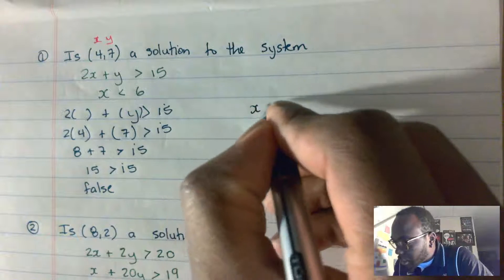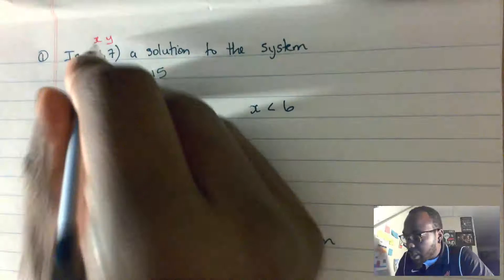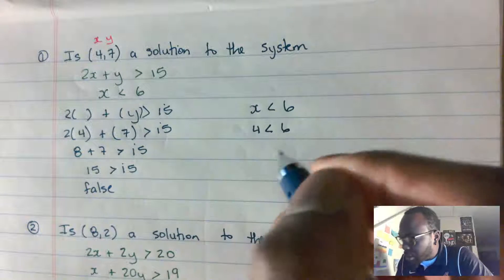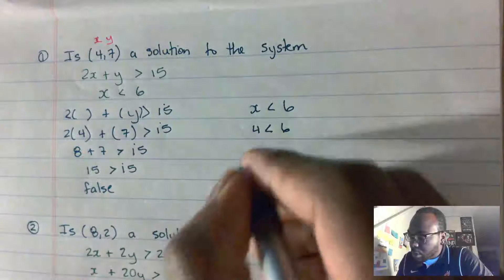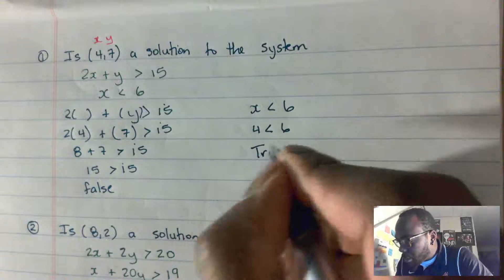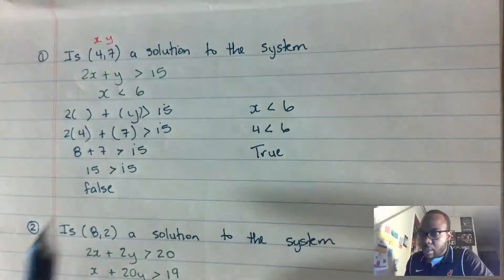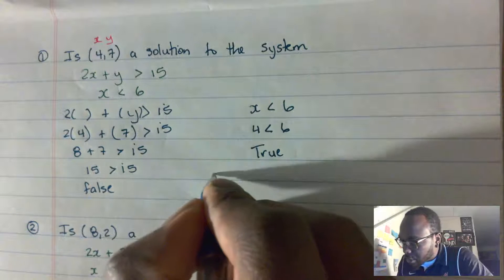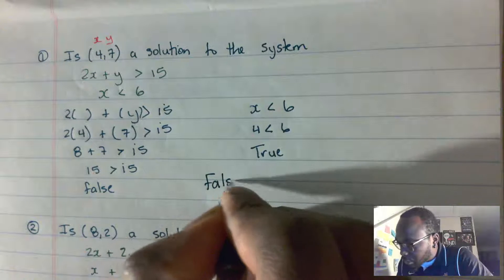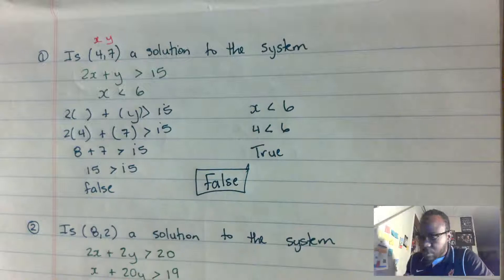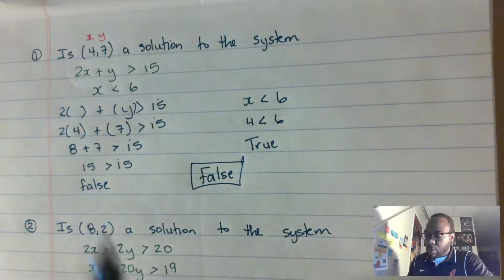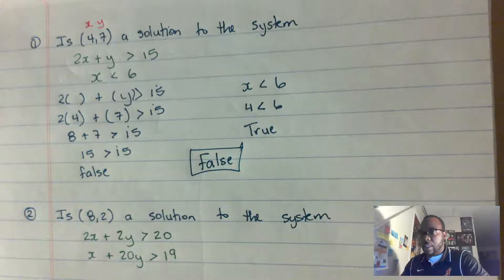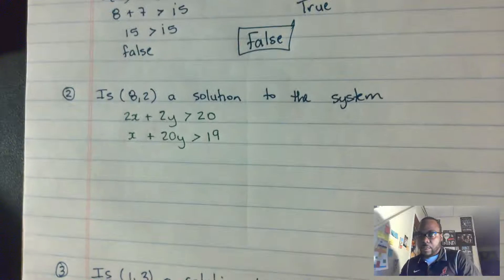You can check the second one as well. For x < 6, we know x is 4, so 4 is less than 6 — that is true. But in order for the pair to be a solution, both statements have to be true. Since the first one is false, the answer for this example is false.